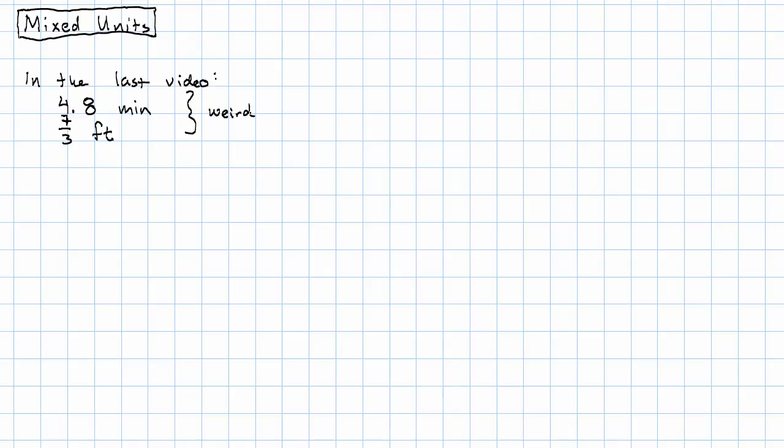This is not normally how we talk about units. How do we usually talk about measurements that have some of a bigger unit and then less than a whole one? Well, usually we talk about things like a class is 1 hour and 15 minutes long, or a person is 5 feet 6 inches tall.